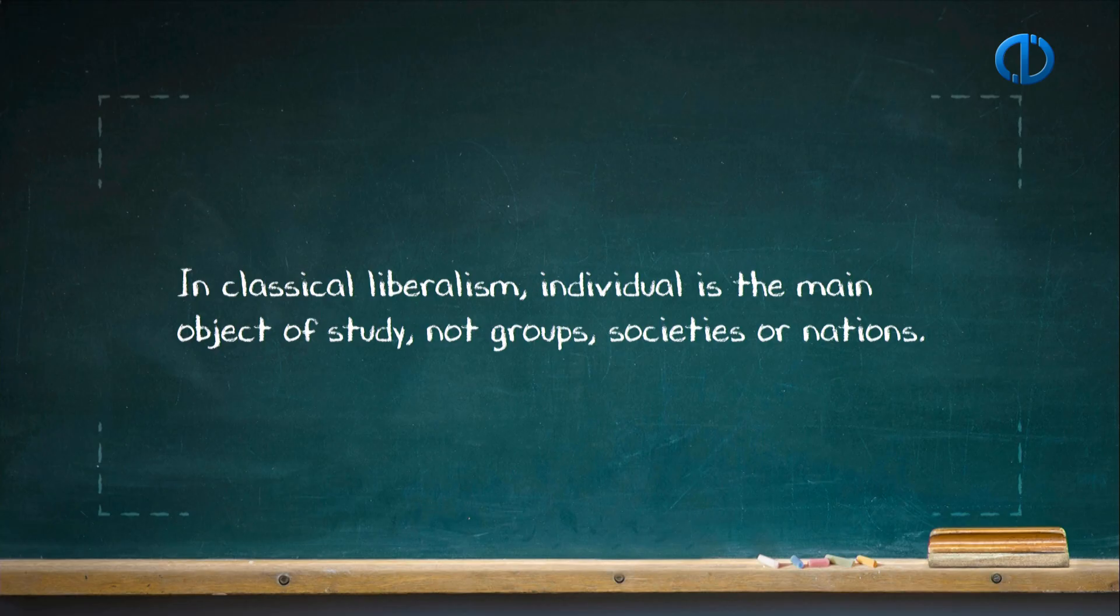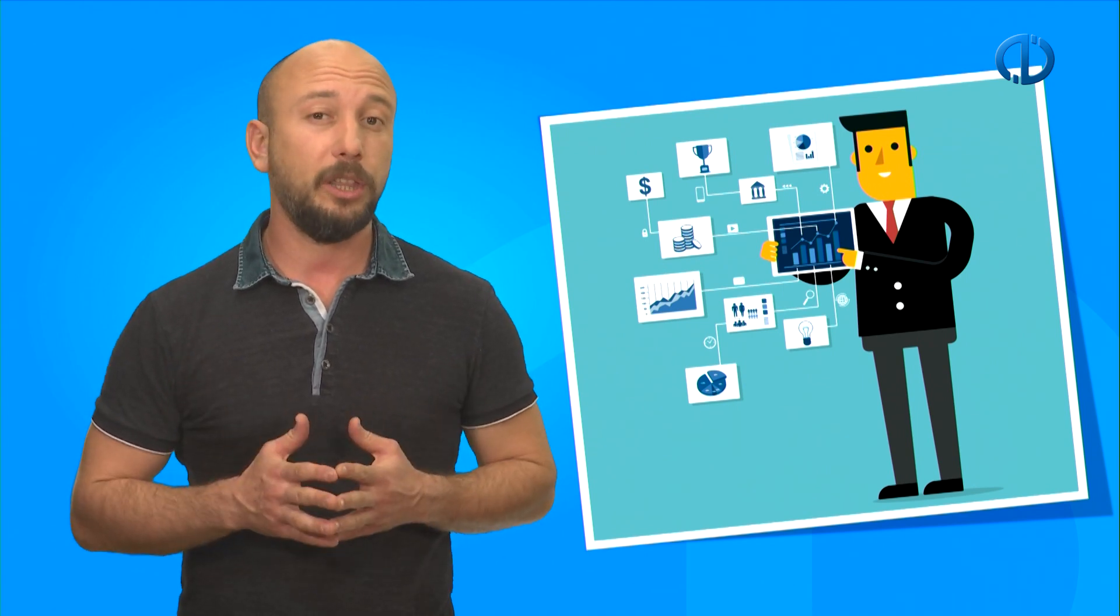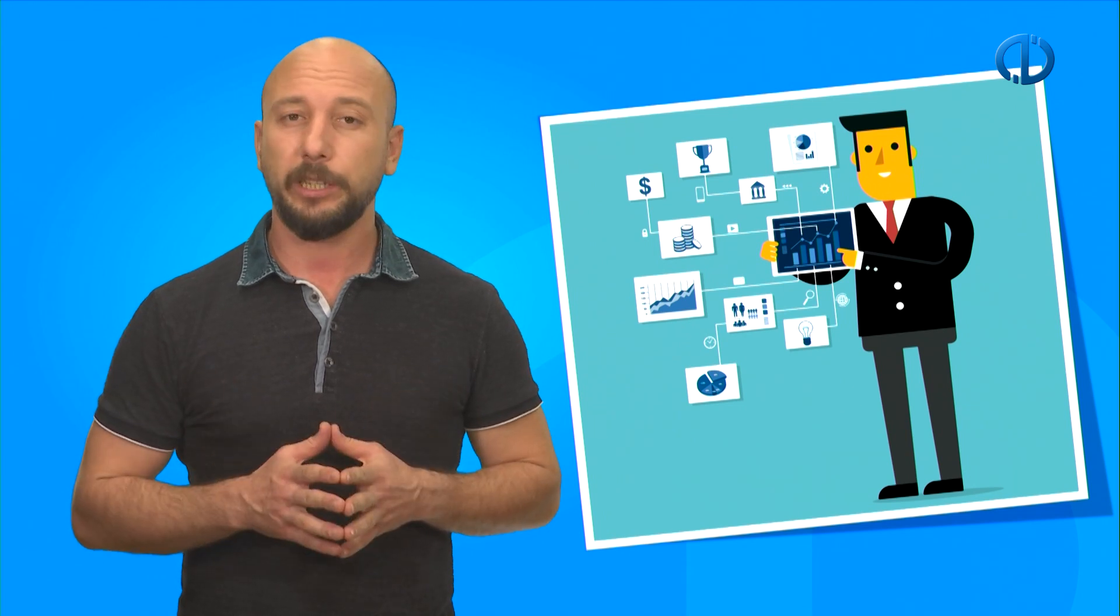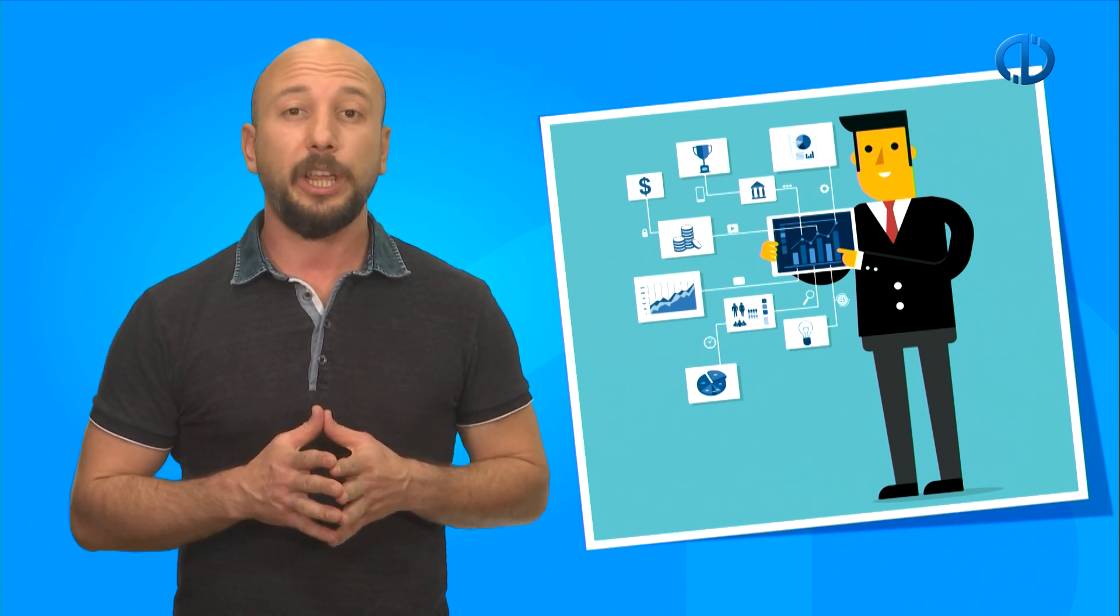In Classical Liberalism, individual is the main object of study, not groups, societies or nations. In this essential principle of liberalism, freedom of the individual is based on negative freedom, which is freedom from arbitrary authority and includes freedom of conscience, a free press, free speech, equality under the law, the right to hold and exchange property.